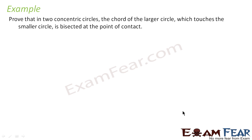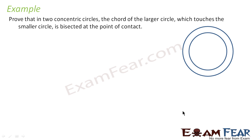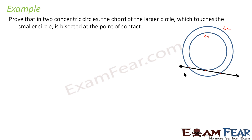Let's do an example. The question says we have to prove that for two concentric circles, the chord of the larger circle which touches the smaller circle is bisected at the point of contact. Let's draw this — two concentric circles, let's call them C1 and C2. The chord of the larger circle is bisected at the point of contact. Let's name the endpoints A and B, and the point of contact C.